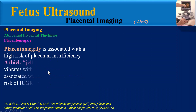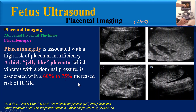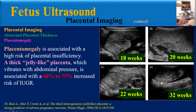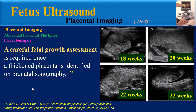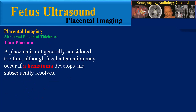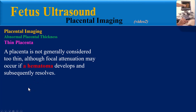Placentomegaly is associated with a high risk of placental insufficiency. A thick jelly-like placenta which vibrates with abdominal pressure is associated with a 60 to 75 percent increased risk of IUGR. This ultrasound image shows a thick heterogeneous jelly-like appearance of the placenta at different gestational ages: 18, 20, 22, and 32 weeks gestation. A careful fetal growth assessment is required once a thickened placenta is identified on prenatal sonography.